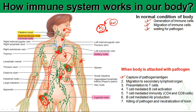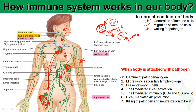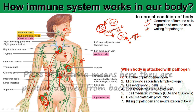Through phagocytosis — the process by which the dendritic cell engulfs and fragments the bacterium — the dendritic cell kills the bacteria, breaks it into pieces, and captures the bacterial fragments, expressing them on its cell surface. Not only do they kill the bacteria, they also display these bacterial fragments on their surface.